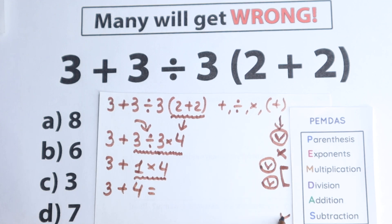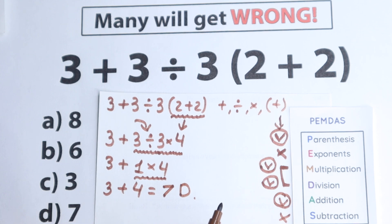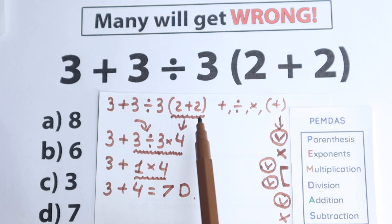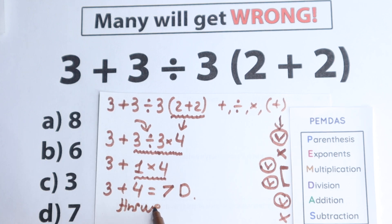So as a result we have 3 plus 1 times 4, which equals 3 plus 4. We don't have subtraction, we have only addition. So we can easily solve the last step: 3 plus 4 equals 7, which is option D. So this is a very tricky question. I hope your answer is the same as mine, but definitely don't feel bad — maybe you solved it using another order of operations. I solved it according to PEMDAS, and you can check this answer using the most popular order of operations, and you will have the same answer.